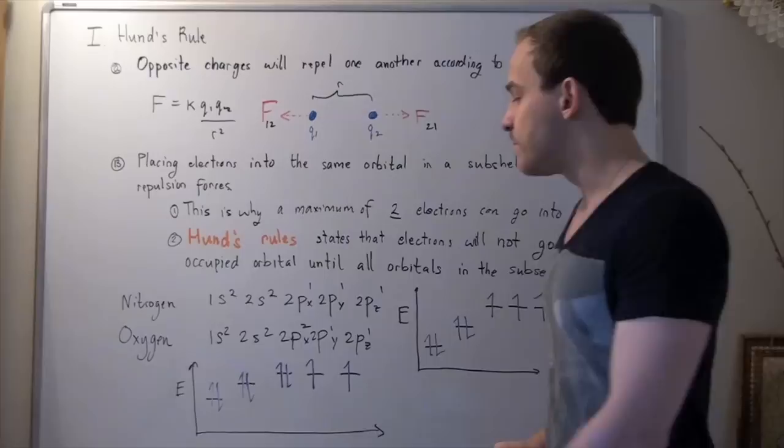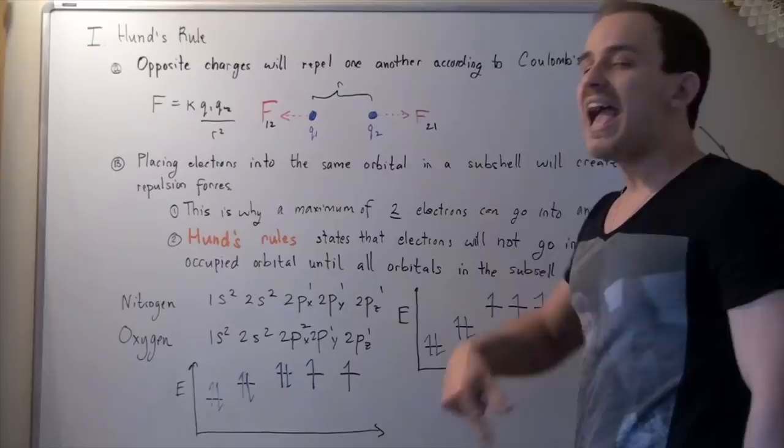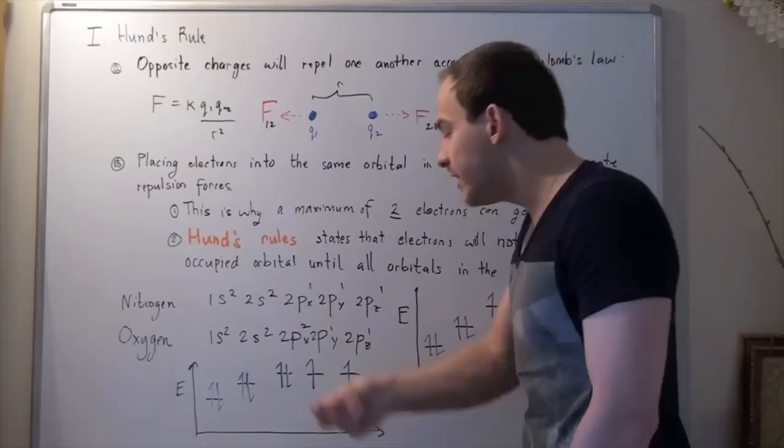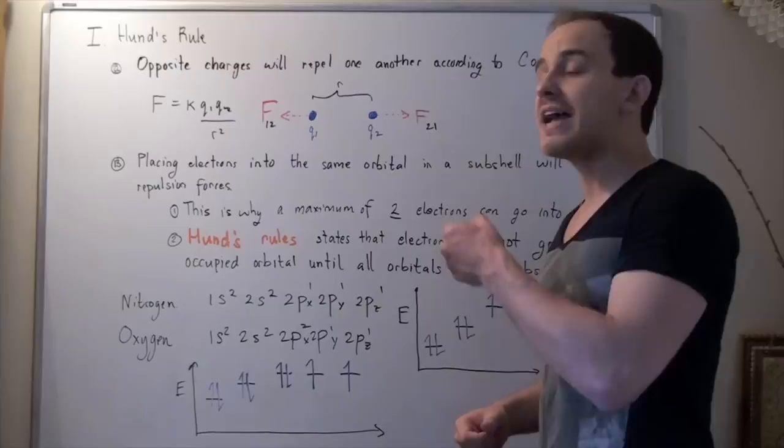So, first we distribute the three electrons the following way. We place one into px, one into py, and then one into pz. And now, since all of them are filled, my fourth electron will go into filling completely this orbital, this px orbital.